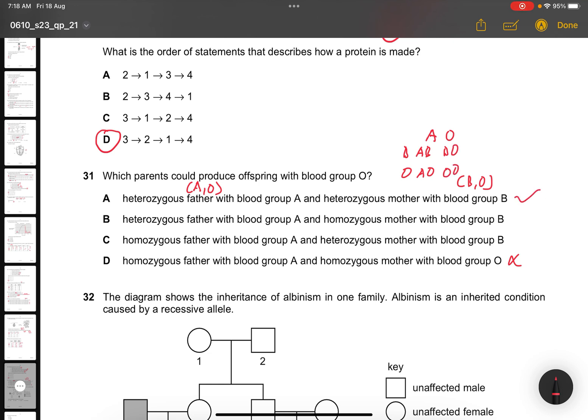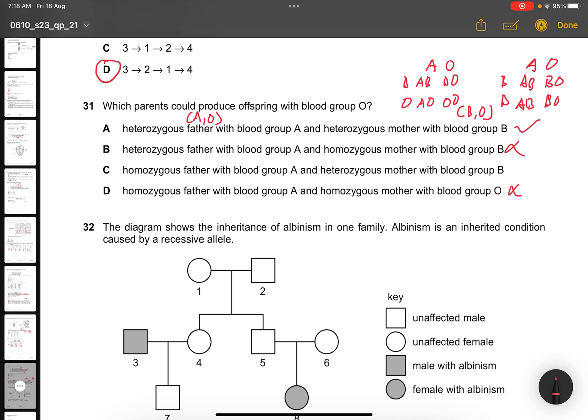We try to do the Punnett square so that it makes sense. It would be AB, AO, BO, and OO. So this can work. Heterozygous of AO and blood group B, which is AB, AB, BO, BO. So this one cannot. If it's a homozygous father of group A, which is AA, and heterozygous mom of BO, it will be AB, AO, AB, and AO, which is not possible. The answer is A.